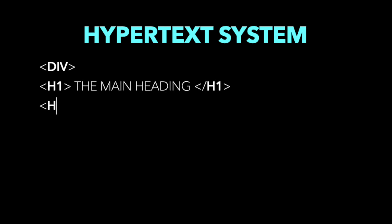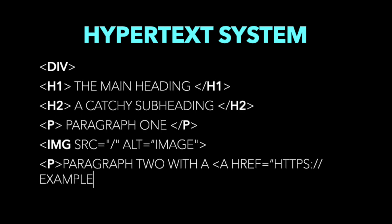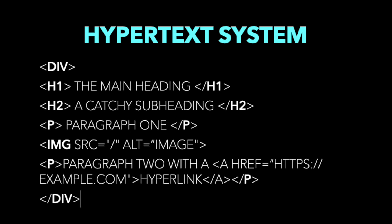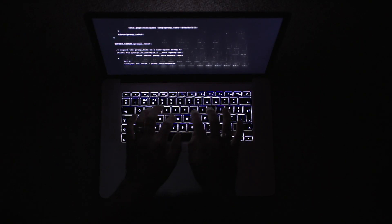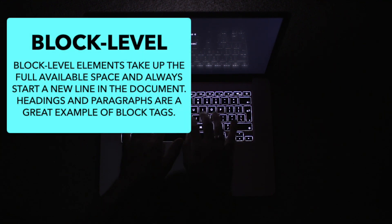They create a hierarchy that constructs the content into sections, paragraphs, headings, and other content blocks. Most HTML elements have an opening and a closing that use the tag syntax. Here you can see an example of code and how HTML elements can be structured. HTML tags have two main types: block-level and inline tags.